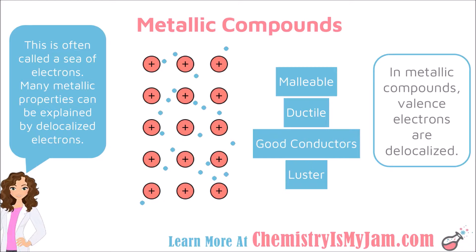Metals also have luster, which means that they are shiny. The electrons on the outer surface of the metal serve as a barrier that prevents light from entering in as well as it normally would. That causes the light to bounce off and gives the metal the shiny appearance that we are used to.